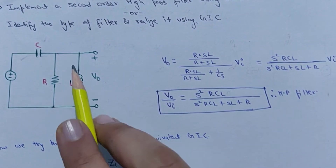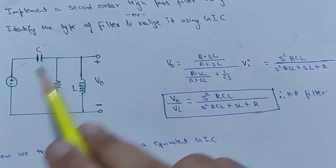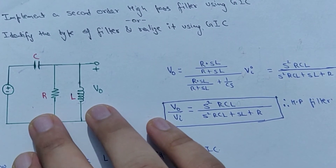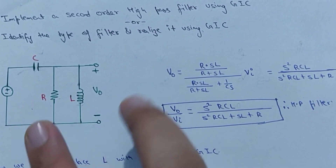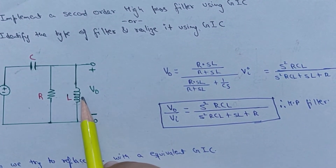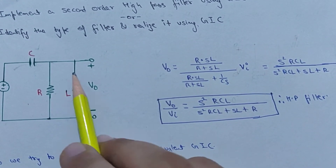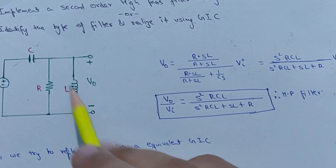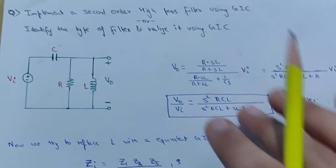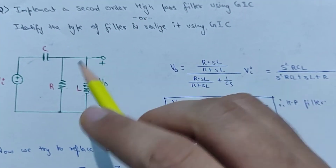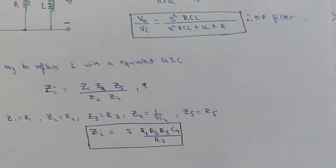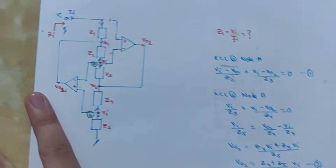It is difficult to build high-value and high-quality on-chip inductors. This is a linear integrated circuit, and all these high pass filters will be present on a small chip — building inductors on a chip is very difficult. Therefore, what we try to do is always replace inductors with op-amp type components. So we will try to replace the inductor, as already discussed in the basic video of the generalized impedance converter.